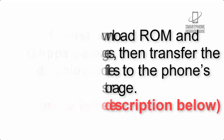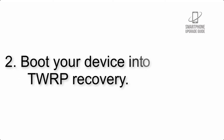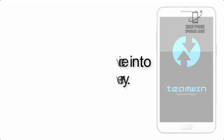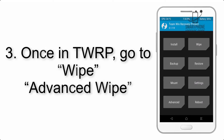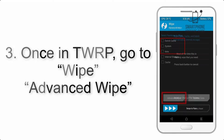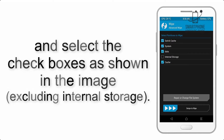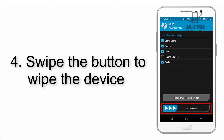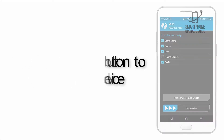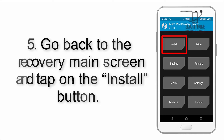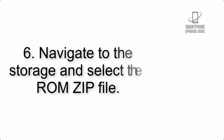Step 2: Boot your device into TWRP recovery. Once in TWRP, click on Wipe, then Advanced Wipe, and select the checkboxes as shown in the image, excluding internal storage. Step 4: Swipe the button to wipe the device.